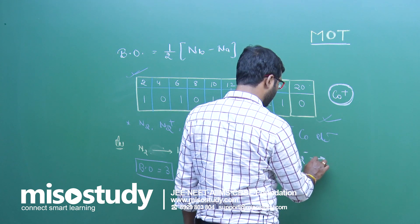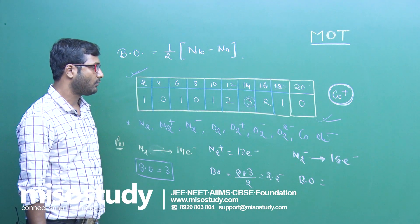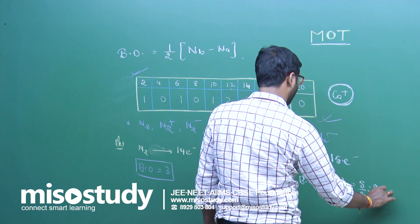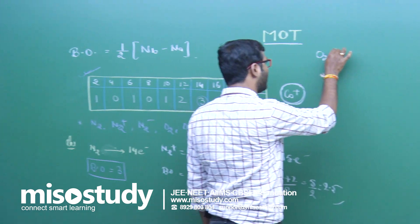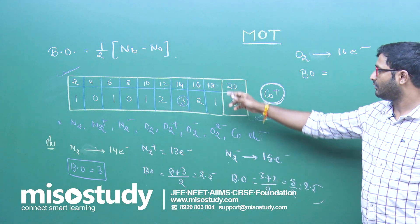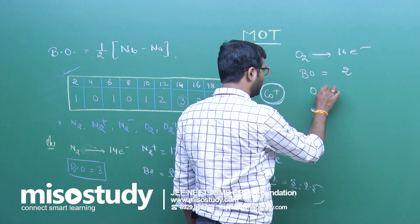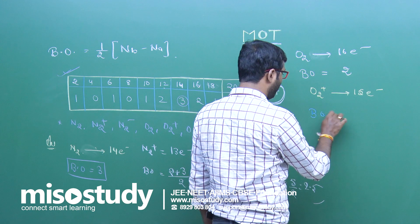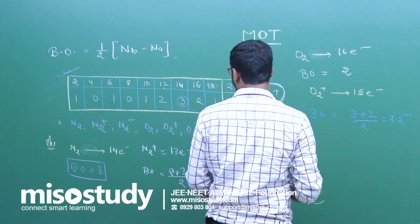For N2−, it has 15 electrons. 15 comes between 14 and 16, so the bond order is (3 + 2) / 2 = 5/2 = 2.5. For O2, it is a 16-electron system. Below 16 in the table there is 2, so the bond order of O2 is 2. For O2+, it has 15 electrons — between 14 and 16 — so bond order is (3 + 2) / 2 = 2.5.